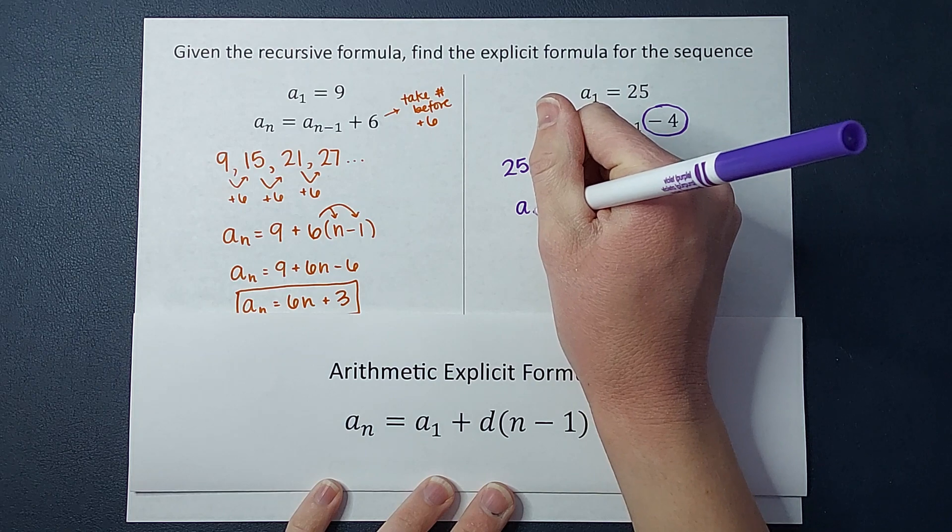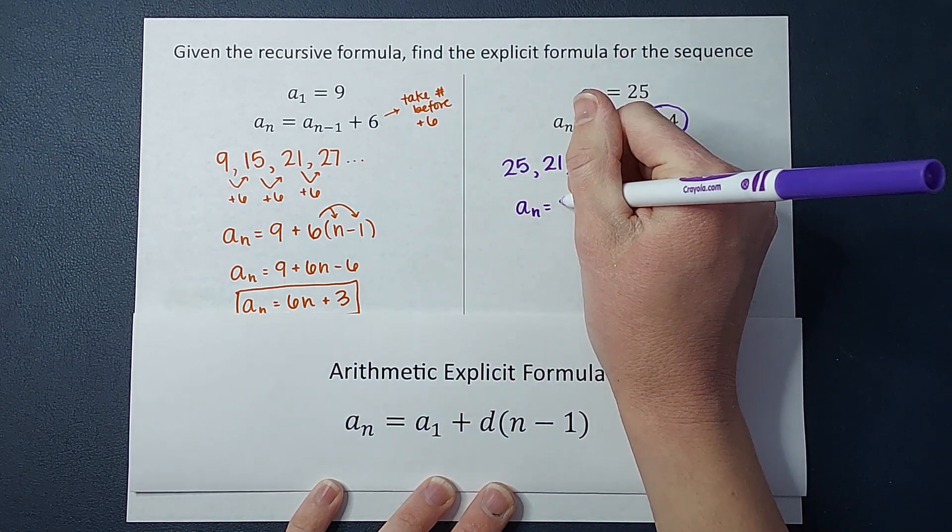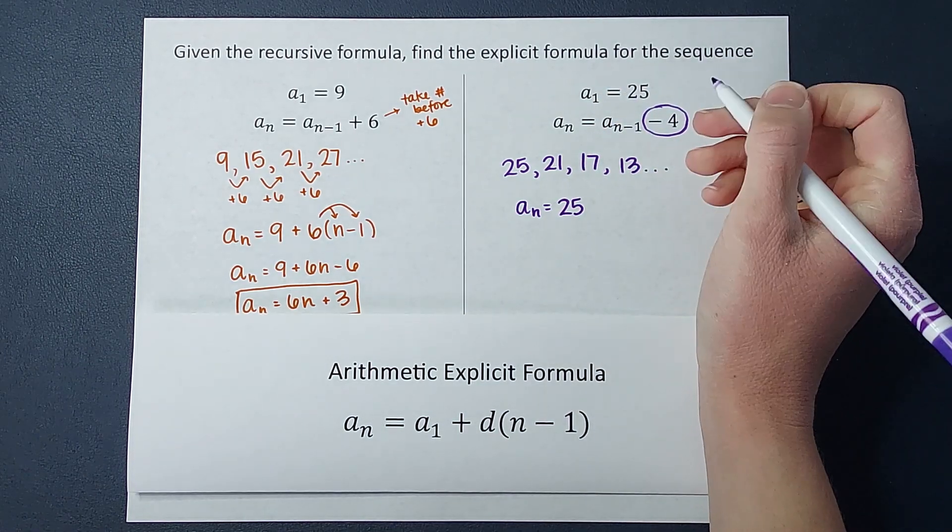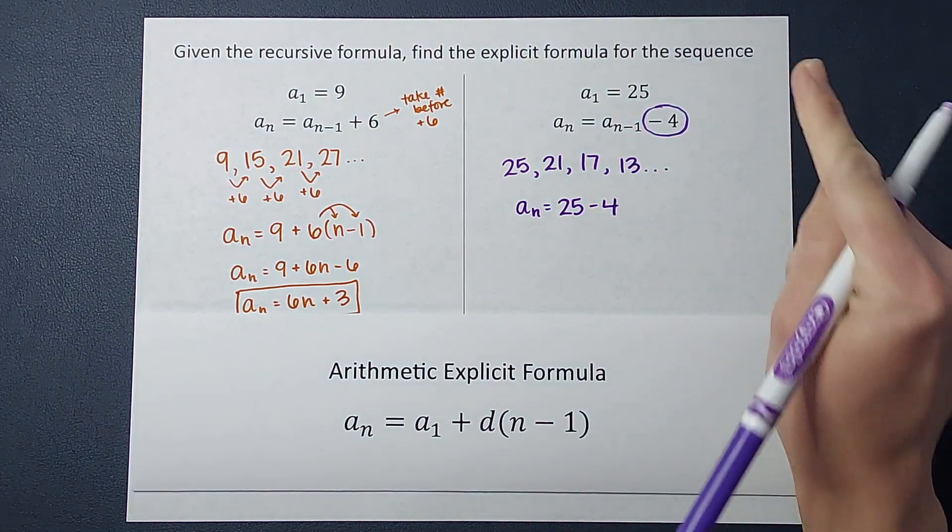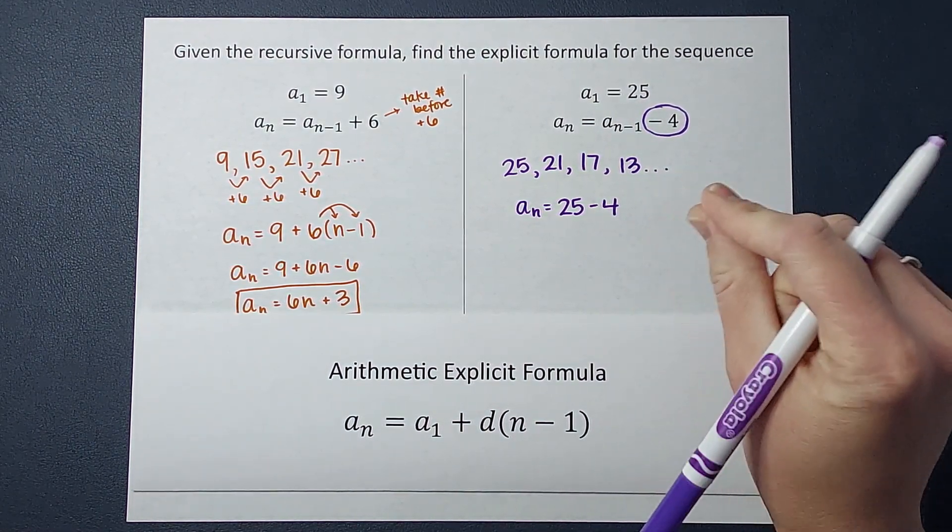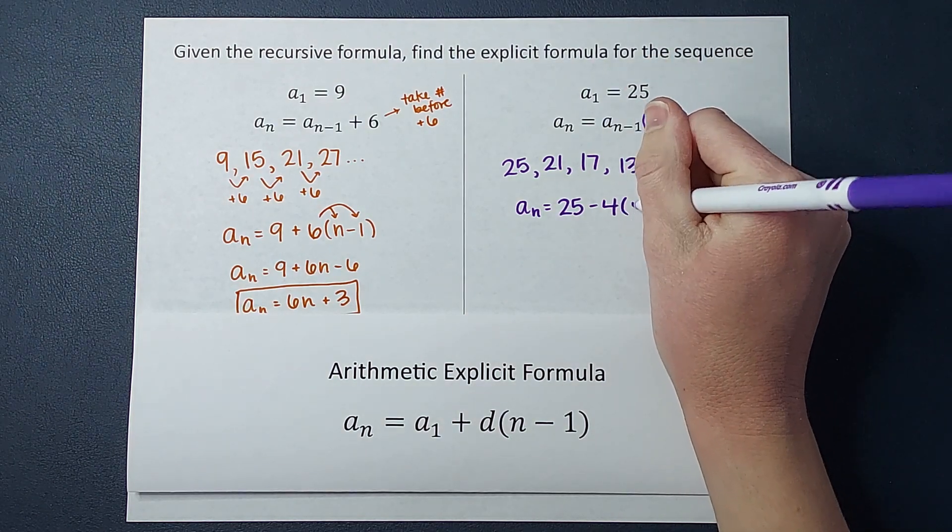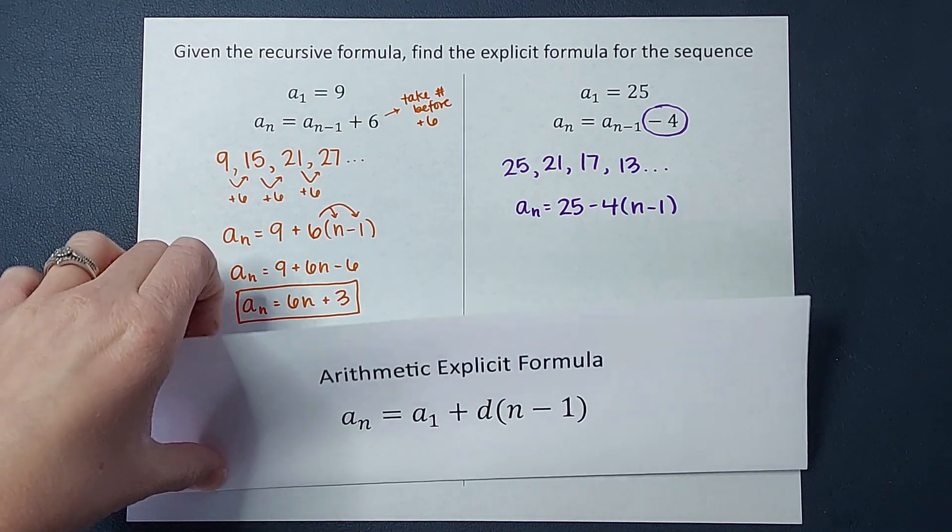Whatever number we want to find, take the first term, 25, a sub 1. And in this case we are subtracting 4. But how many times? One less time than whatever place you want to find. n minus 1. Look at that.